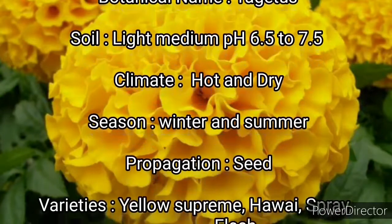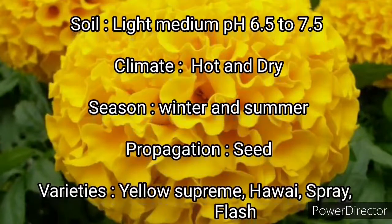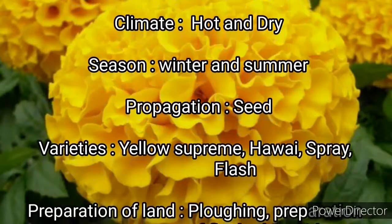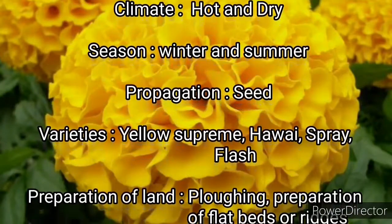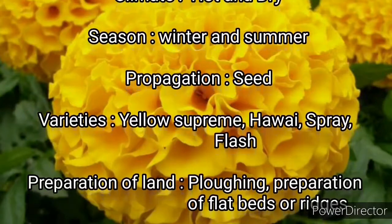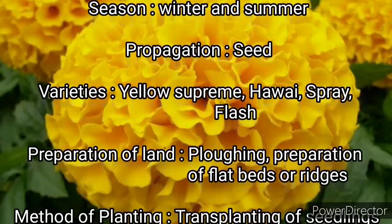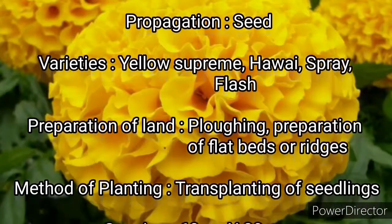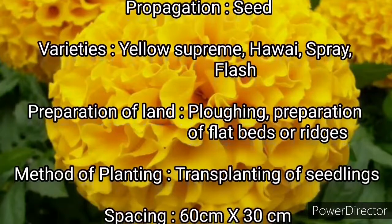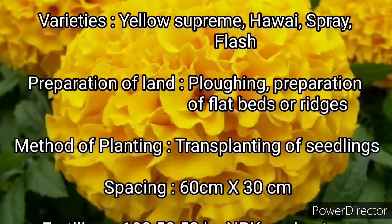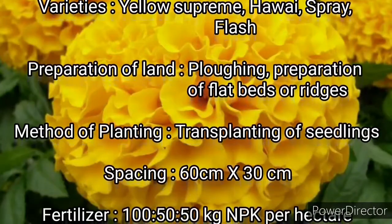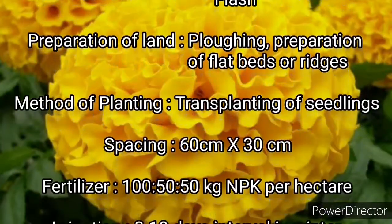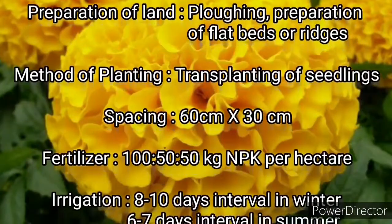Propagation is done through seeds. Varieties are Yellow Supreme, Hawaii, Spray, and Flash. Preparation of land is done by plowing and flatbeds or ridges are prepared. Method of planting is transplanting of seedlings, and the spacing should be 60cm x 30cm.